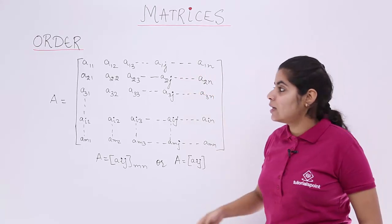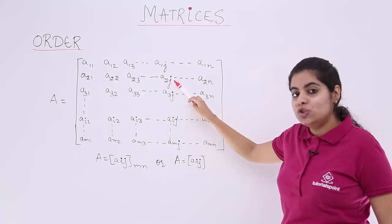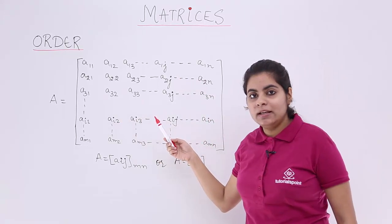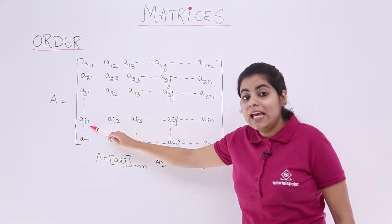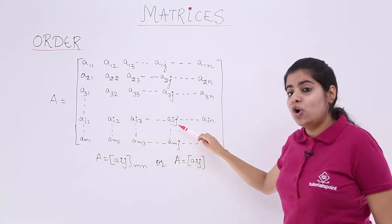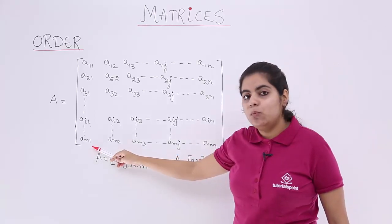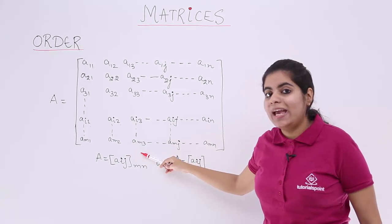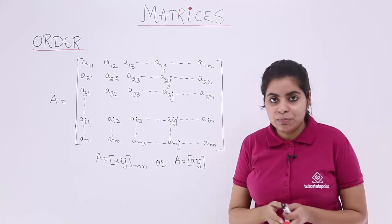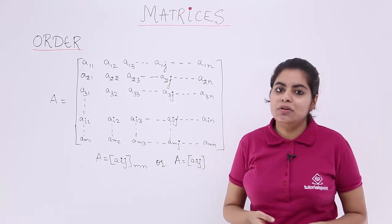The next row is a21, a22, a23, and so on till a2j and a2n. Similarly, a31 and moving downwards, we have ai1, ai2, and so on. The last row is am1, am2, am3 and so on till amn. Remember, a matrix is nothing but an arrangement where you have different rows and different columns.